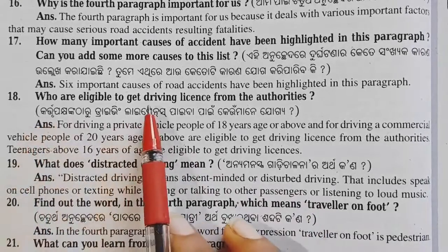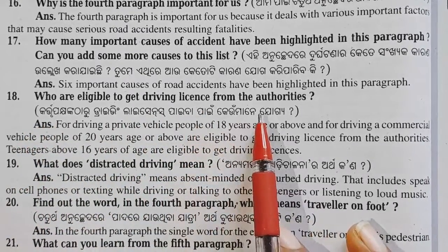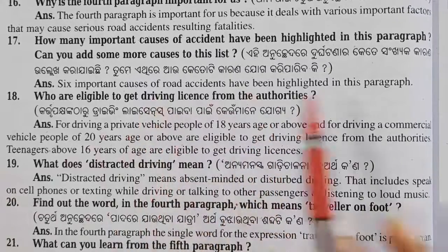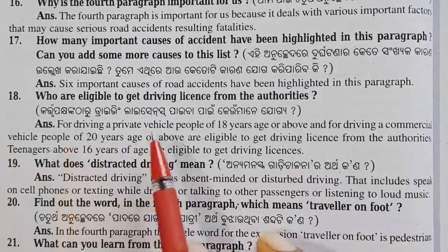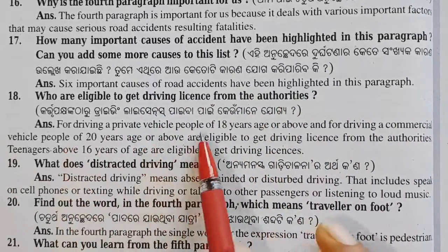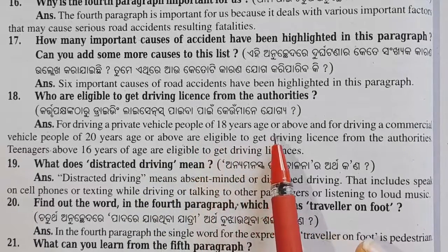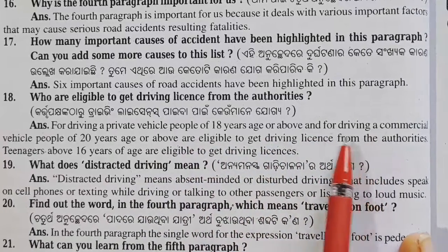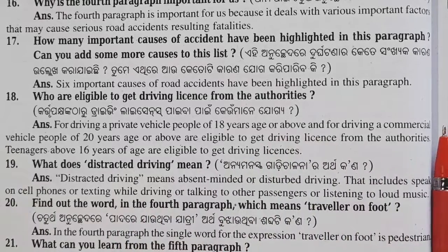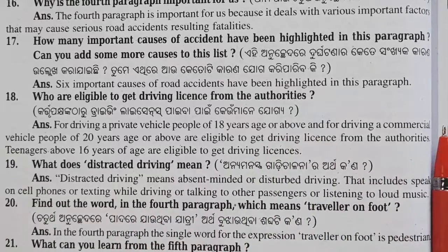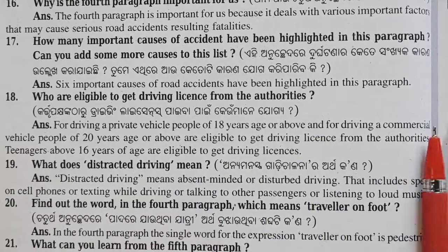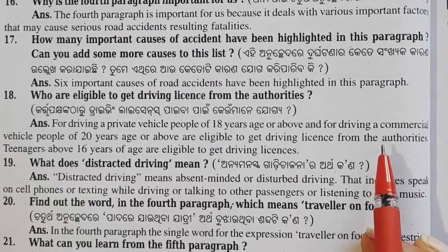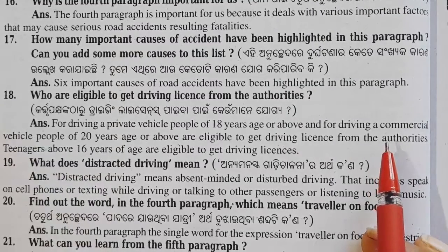Who are eligible to get a driving license from the authorities? For driving a private vehicle, people of 18 years of age or above, and for driving a commercial vehicle, people of 20 years of age or above, are eligible to get a driving license from the authorities.